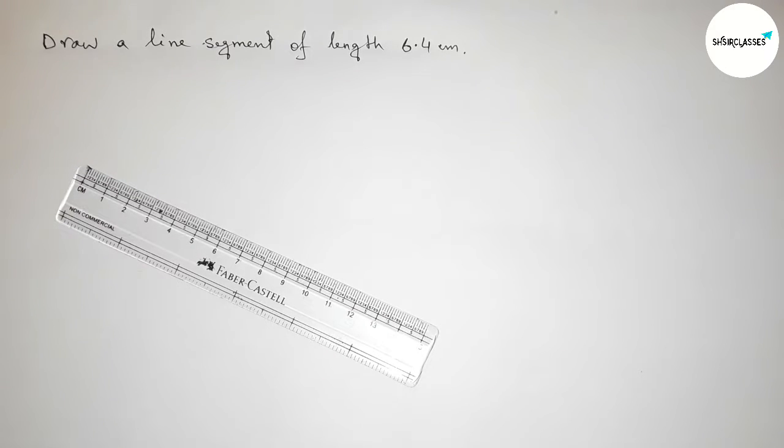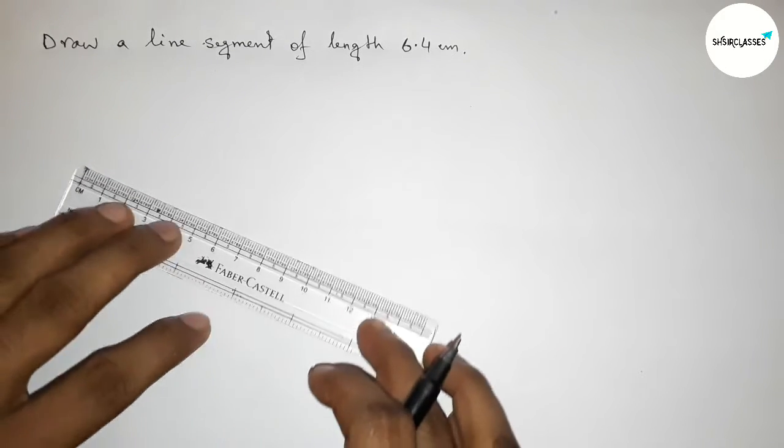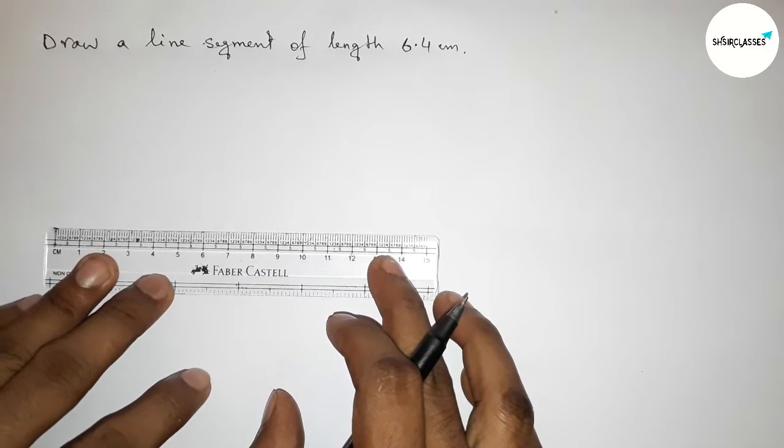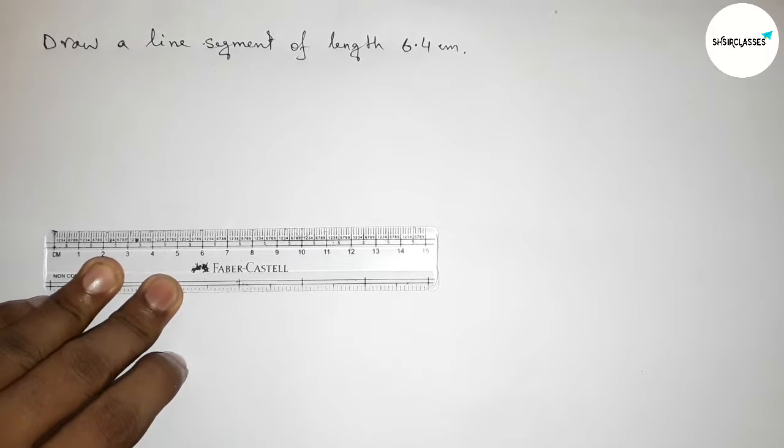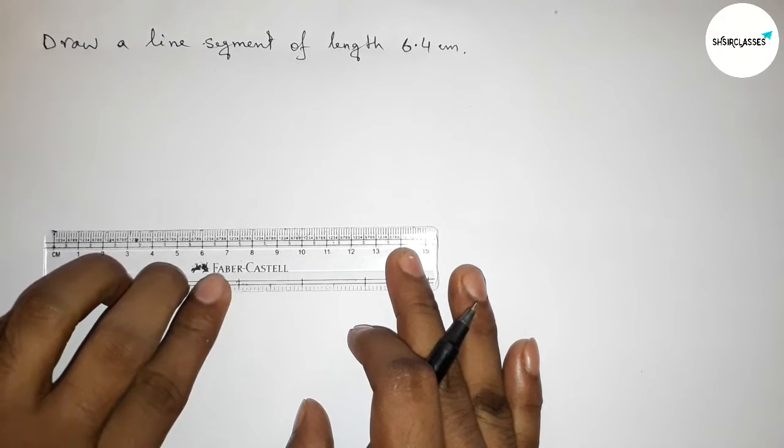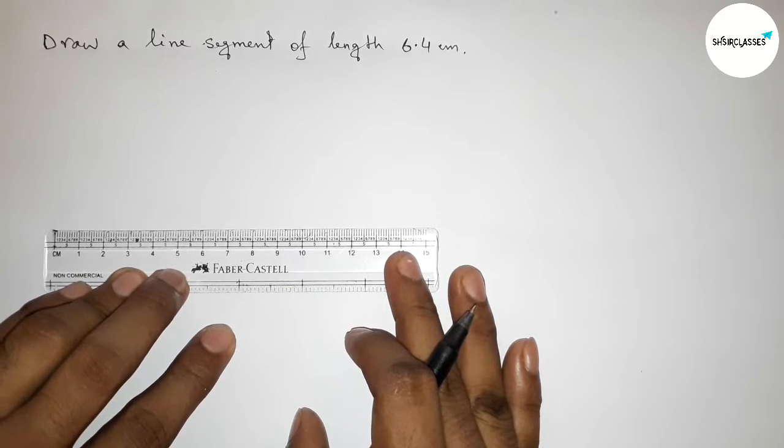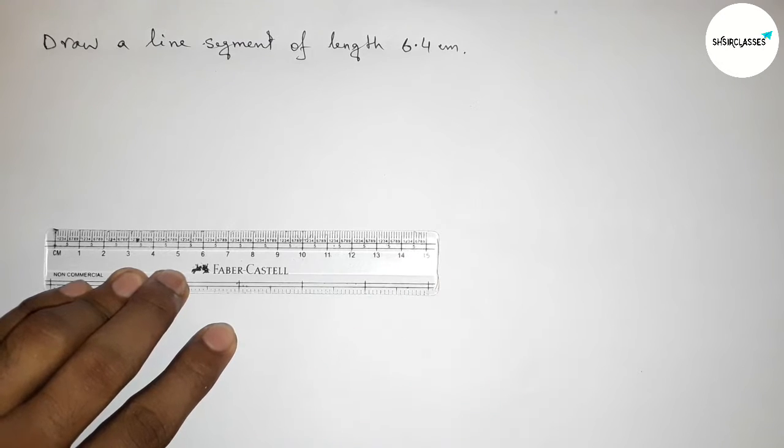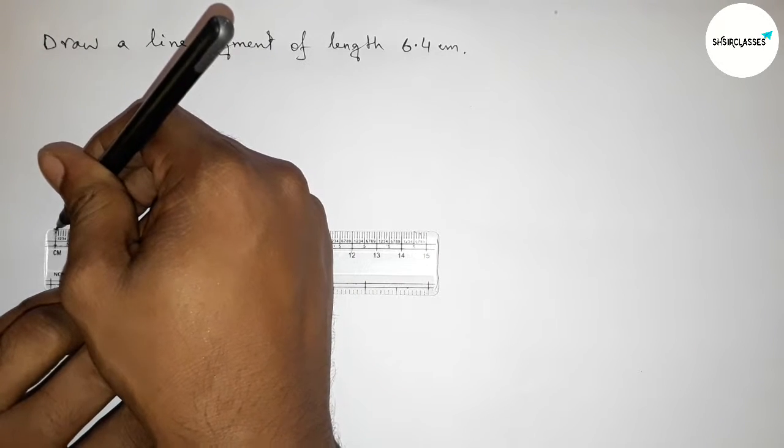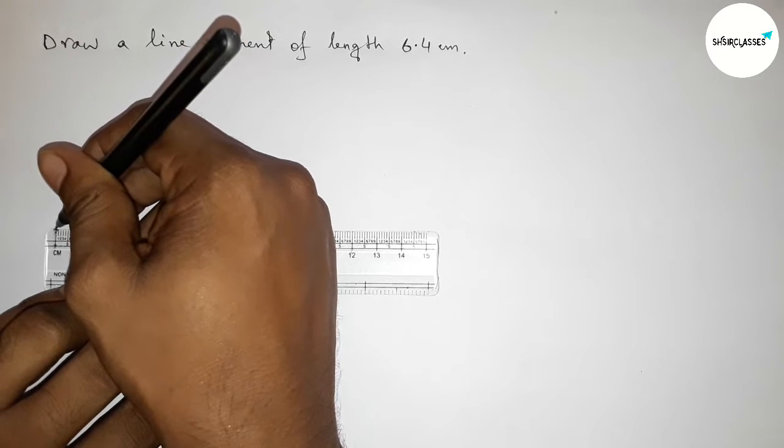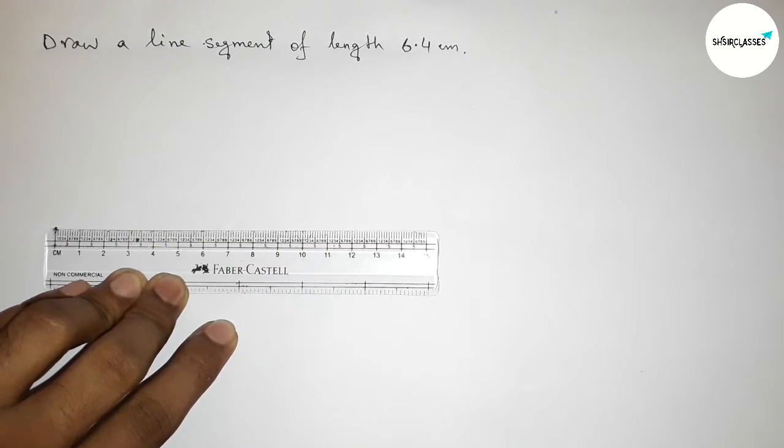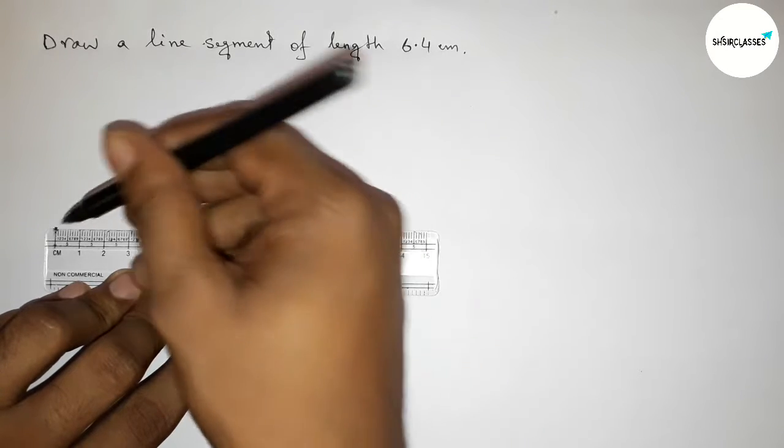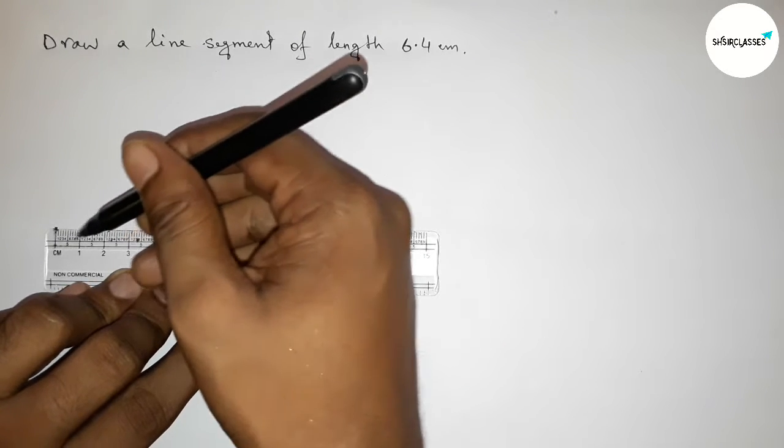First, putting the scale perfectly, then measuring the length 6.4 centimeters. This is the starting zero, so first marking here at zero centimeter. Now counting: zero, one centimeter...